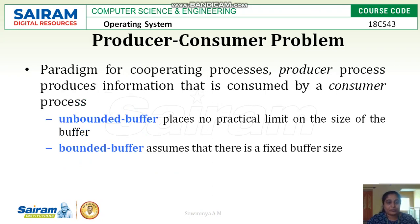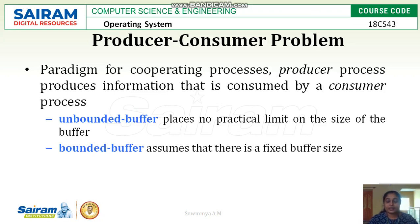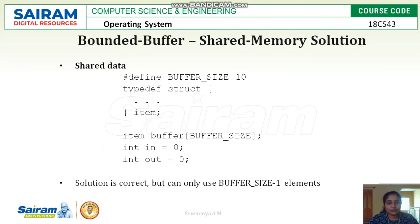Next we have the producer-consumer problem for both bounded and unbounded buffer. In the producer-consumer problem, consider there is a producer who constantly produces data — they are the sender of a message — and a consumer who constantly receives or consumes the data. For unbounded buffer, the buffer size has no limit and the consumer can consume data as the producer produces it. For bounded buffer, there is a fixed size and the producer should wait until the consumer completely receives the data.